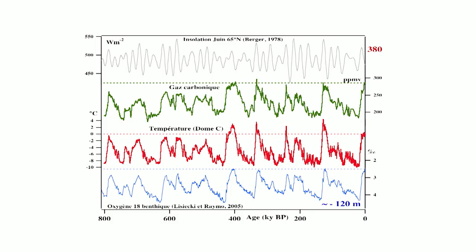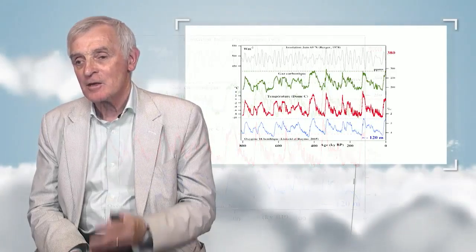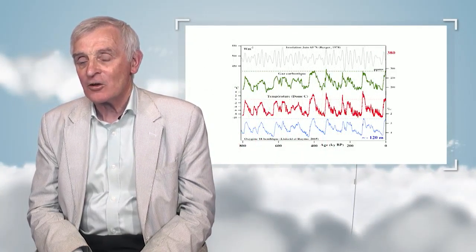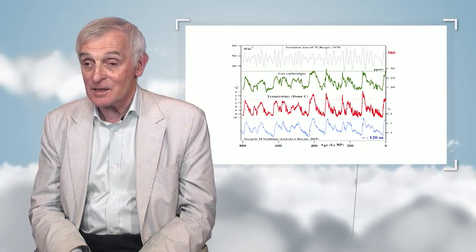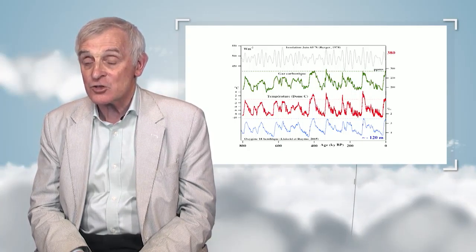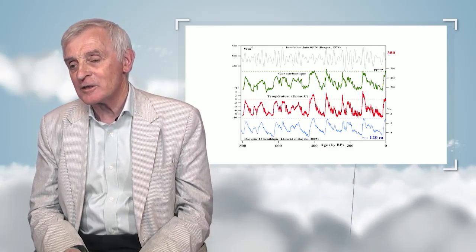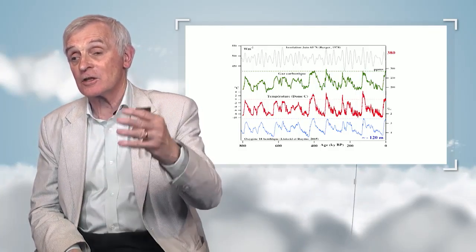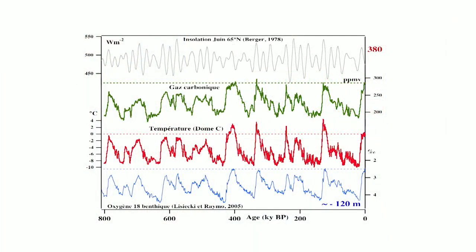Another climatic indicator is sea level, measured with marine sediments. During glacial periods, the sea level is 120 meters lower than it is currently — so glacial periods and sea level are correlated. More interestingly, we can look at CO2 registrations showing high CO2 levels during warm interglacial periods — about 280 ppm — and much lower levels of about 180 ppm during glacial periods.